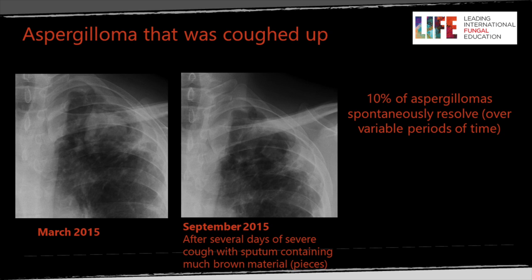Aspergillus can spontaneously improve. These chest X-rays from March to September 2015 show this happening: in March there's a classical crescent around a fungal ball, and then after a few days of heavy coughing with brown material, the cavity appears clear. However, this improvement doesn't mean the patient is cured — the cavity is still infected with aspergillus. Any neovascularisation will still be there and the patient should ideally have a CT scan and if necessary an angiogram to check further.